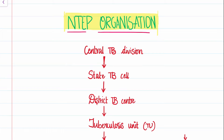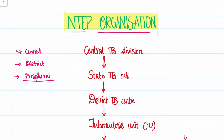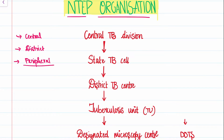Similarly, for the NTEP program, we have an organization which mainly has three tiers: the first one is the central organization, then we have the district organization, and the peripheral institutions. These are the three main tiers of the organization. Here I have a detailed organogram, so let's look into it.